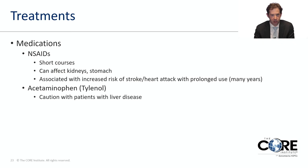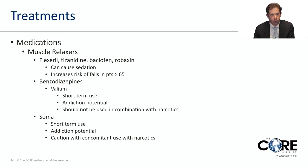Tylenol is a common treatment that can be helpful, but we must caution its use in patients with liver disease. Sometimes when patients present with acute back pain and muscle spasms, we try muscle relaxers. Common ones are Flexeril, Tizanidine, Baclofen, and Robaxin. The most common side effect is sedation, and they have a black box warning for patients older than 65 as they can increase the risk of falls.